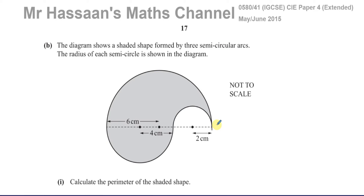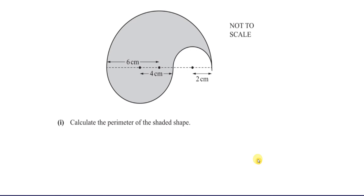There are three semicircles. You've got this small semicircle over here, which is like a bit that's cut out from the shape. Then you've got this medium-sized semicircle, and a large one. The small one has a radius of 2 centimetres, the medium one has a radius of 4 centimetres, and the big one has a radius of 6 centimetres. The circumference of a circle is given by 2πr.